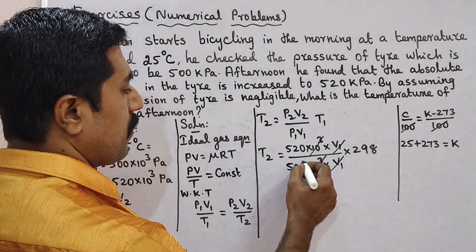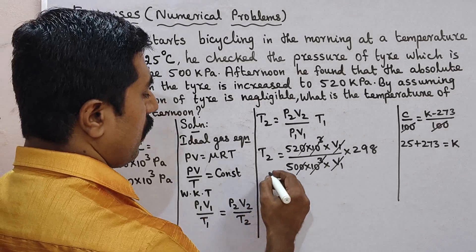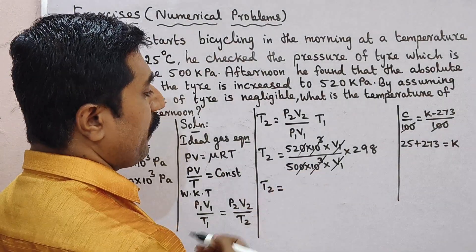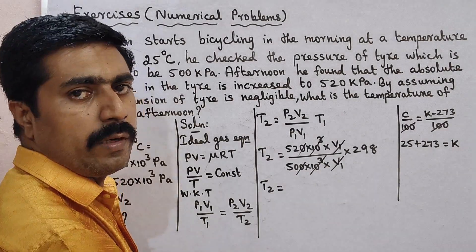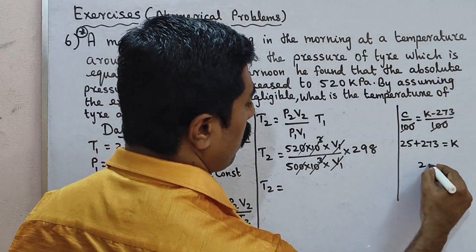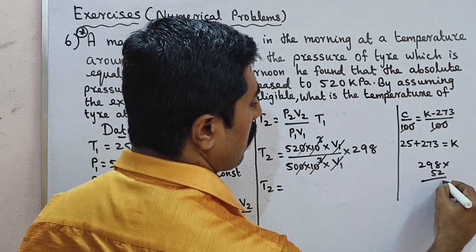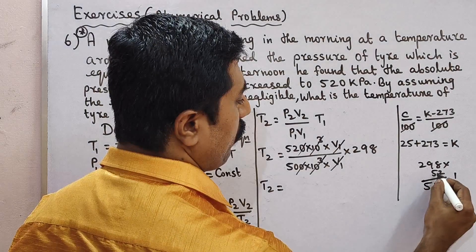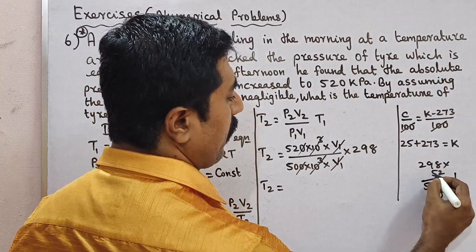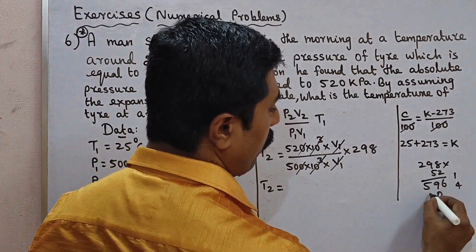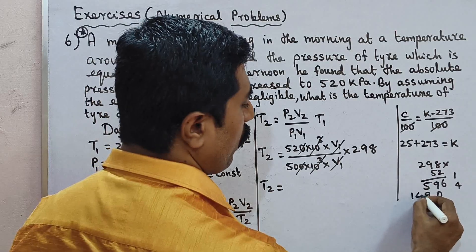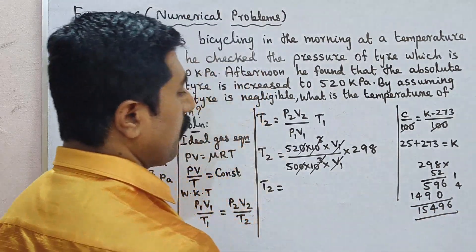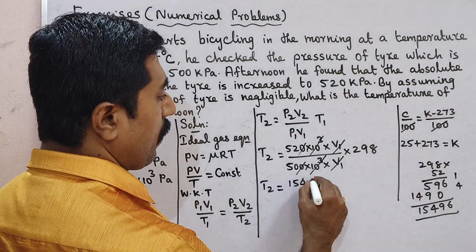V1 and V2 cancel out. So T2 is equal to 520 divided by 500, multiplied by 298 K. That gives T2 equal to 309.92 Kelvin — approximately 309.92 K.